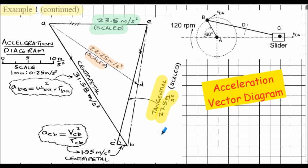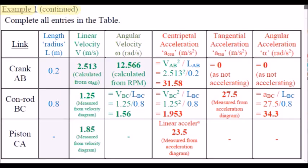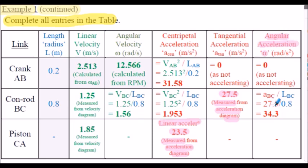Here are all the entries in the summary table. Linear acceleration of piston = 23.5 m/s² (measured from acceleration diagram). Tangential acceleration of conrod = 27.5 m/s² (measured from diagram). Angular acceleration of conrod alpha = tangential acceleration / length of conrod = 27.5 / 0.8 = 34.3 rad/s². That concludes the graphical solution for the slider-crank mechanism shown in Example 1.